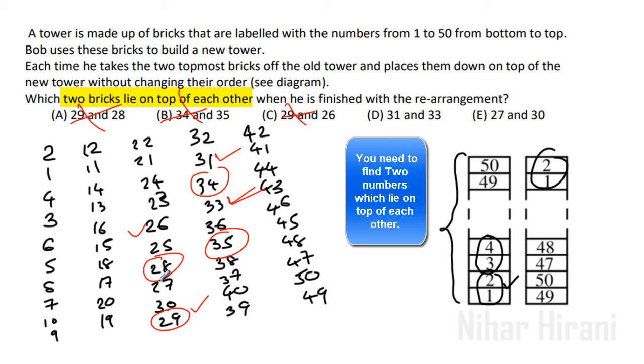27 and 30. 27 and 30 are on each other. So that is my answer. I hope you understood this. If you do the rearrangement correctly, this will be very easy for you.